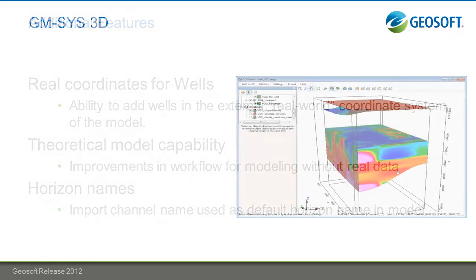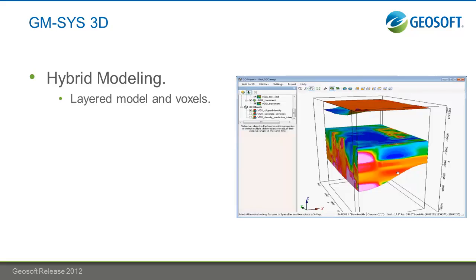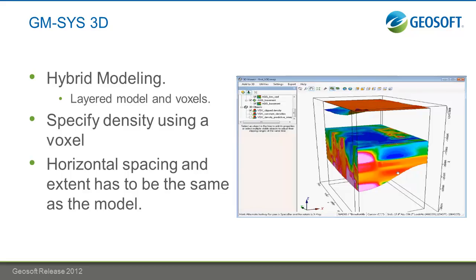Hybrid modeling has also been added to GM-SYS 3D. Although GM-SYS is a layered-earth 3D modeling tool, a hybrid model allows you to bring in voxels to specify the density distribution. Previously, density distribution would be consistent between layers, but now you can specify the distribution with a varying voxel. Variations in values could be represented as a horizontal grid, but now your vertical distribution in the voxel is also taken into account.